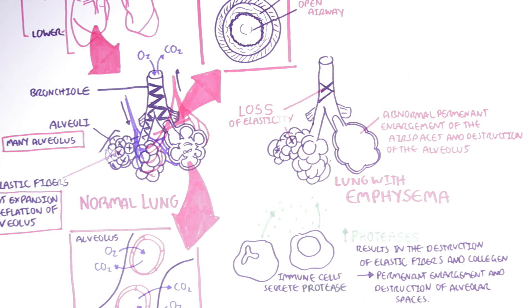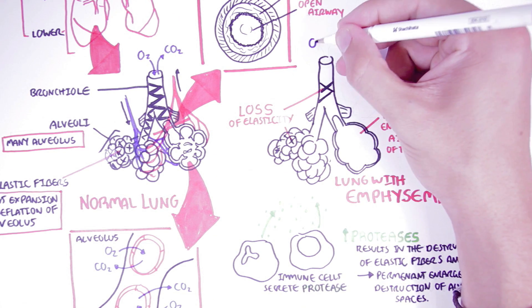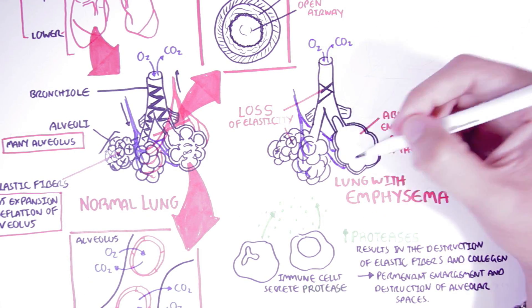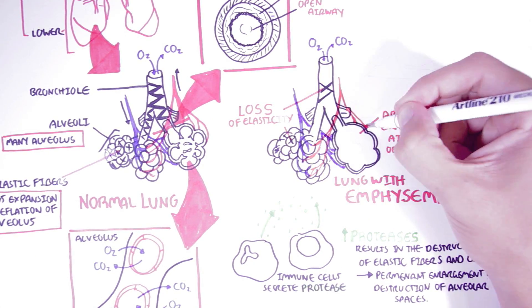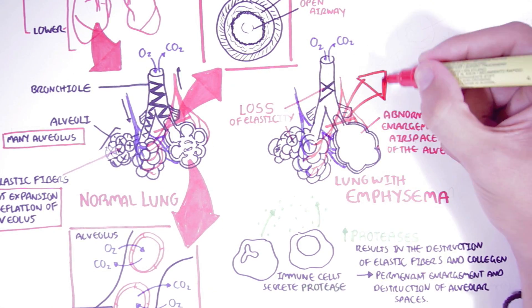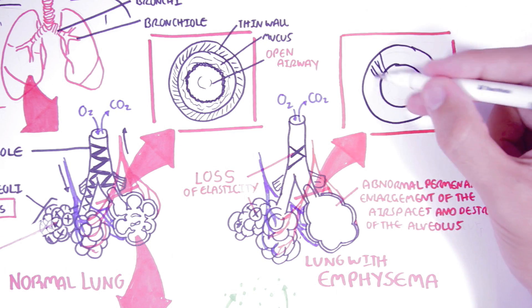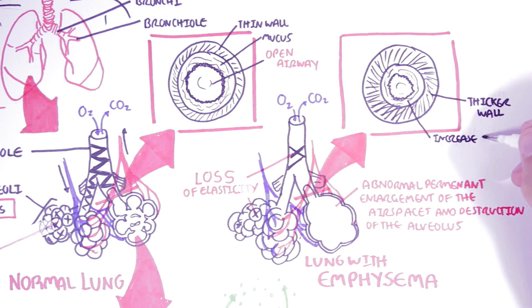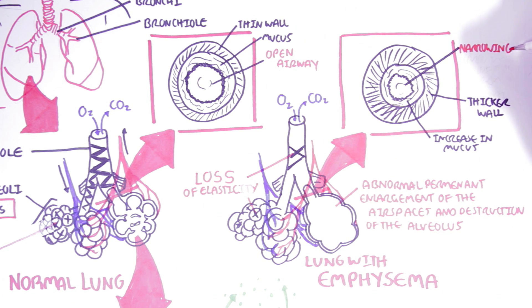What's important to understand is that the alveoli themselves do not enlarge — it is the air space that enlarges. This enlargement in airspace volume causes serious symptoms. The blood supply and oxygen exchange are also affected due to damage of the alveoli. In a cross-section of a bronchiole with emphysema, we see a thicker wall to compensate and an increase in mucus due to inflammation, all of which contribute to the narrowing of the airways, causing difficulty breathing, shortness of breath, and discomfort.